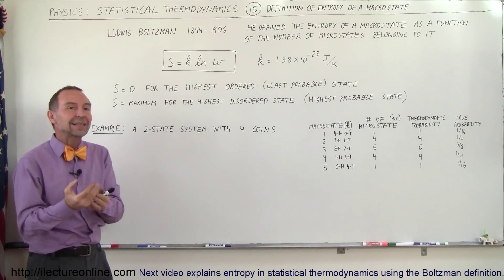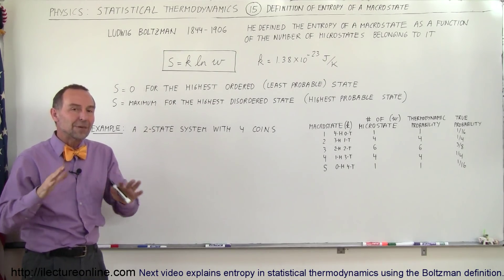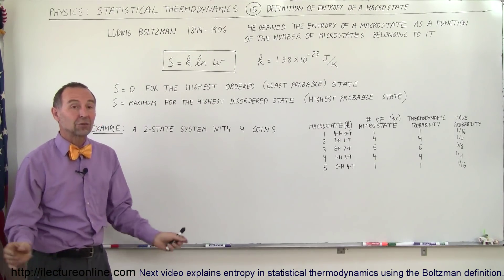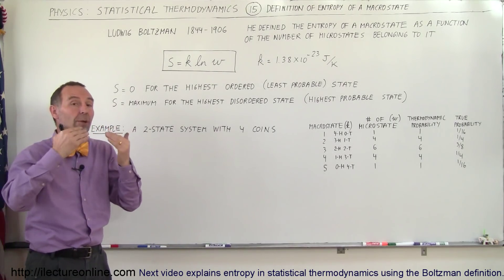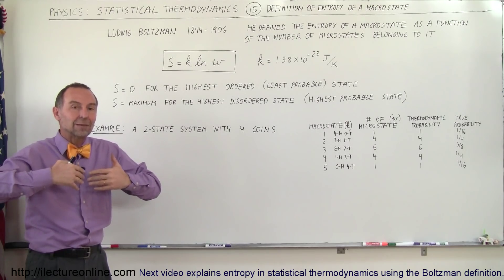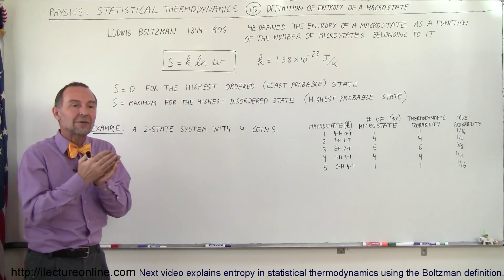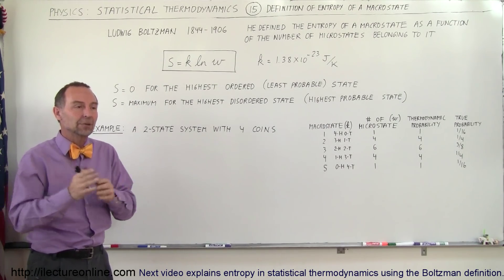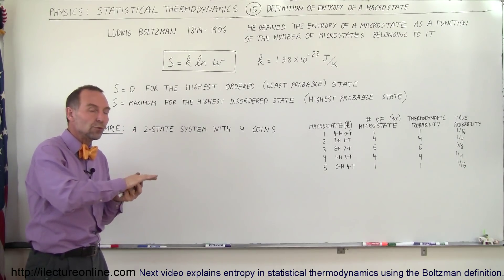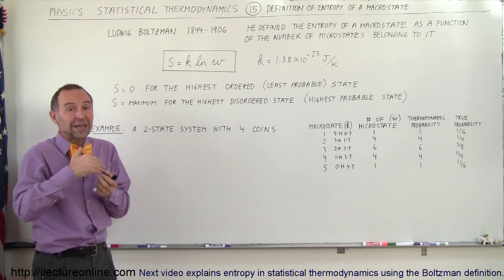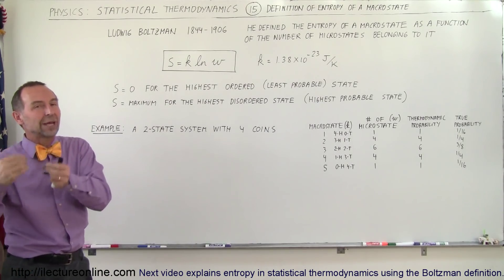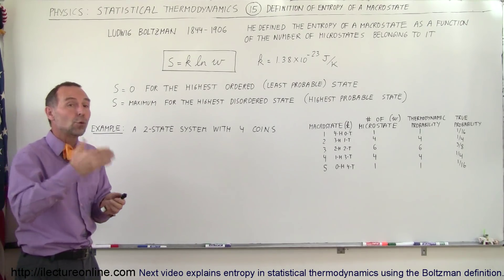So the least likely state that something can be in means entropy is very low. That usually means that there's a high degree of order there. And when entropy goes up, that's when the state becomes more disorderly, you have a higher probability of that to happen. Things tend to move from an ordered state to a disordered state. And the probability of ending up in a disordered state is much greater than the probability of being in an ordered state.